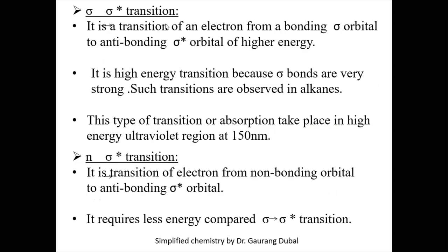The first transition is sigma to sigma star (σ→σ*) — the transition of an electron from the bonding sigma orbital to the sigma star anti-bonding orbital. It is a high-energy transition because sigma bonds are very strong. Such transitions are observed in alkanes (single bonds), and this absorption takes place in the high-energy UV region at around 150 nanometers.